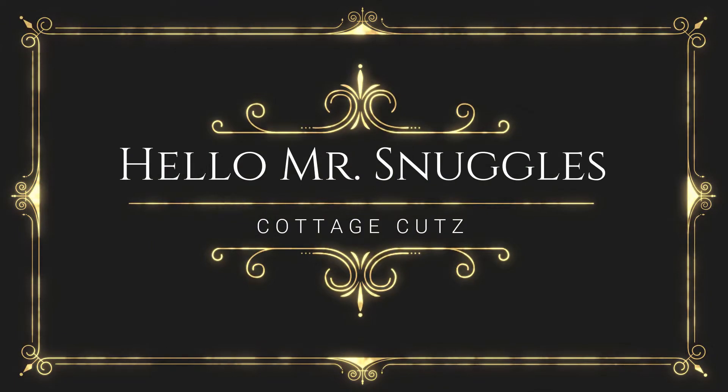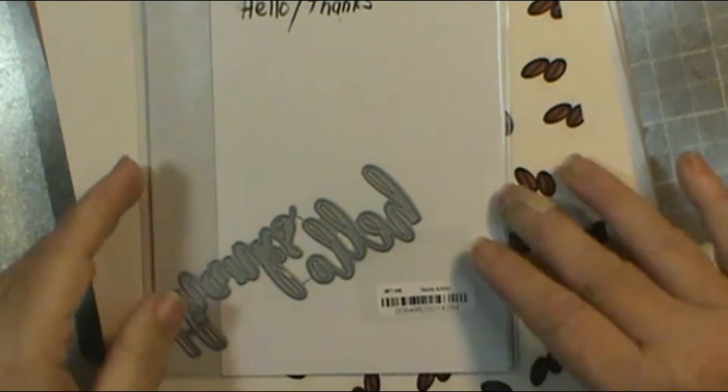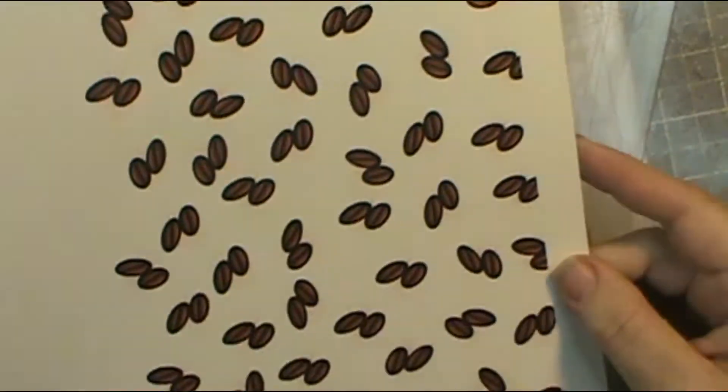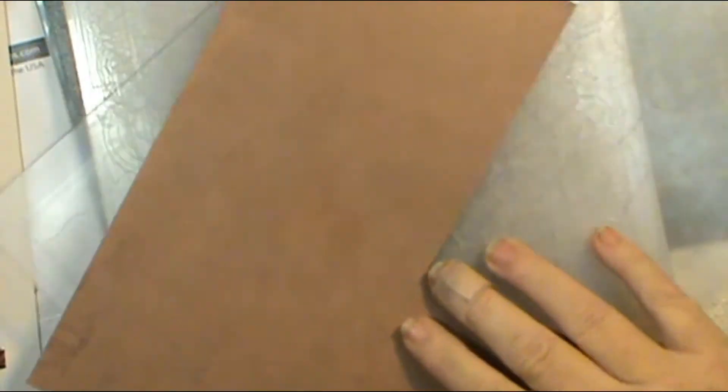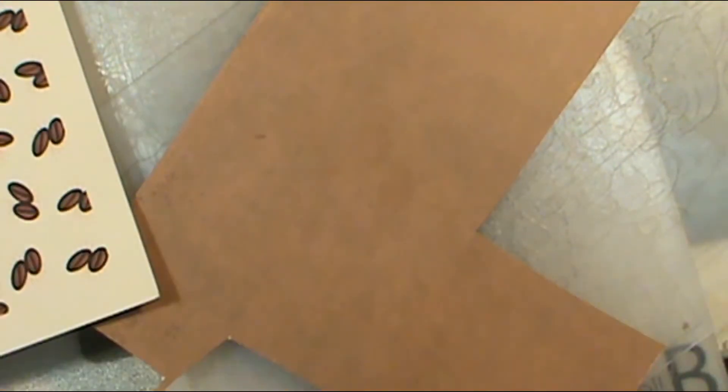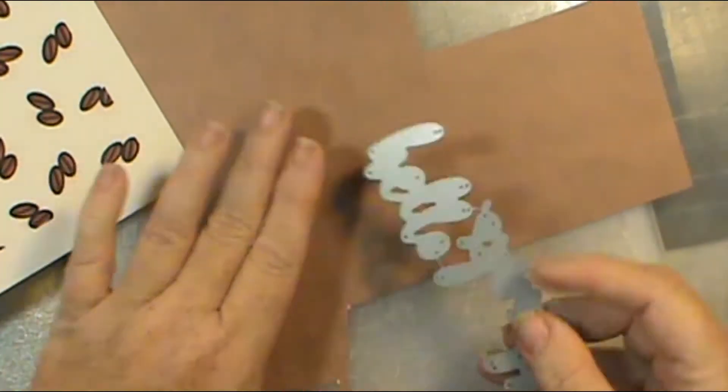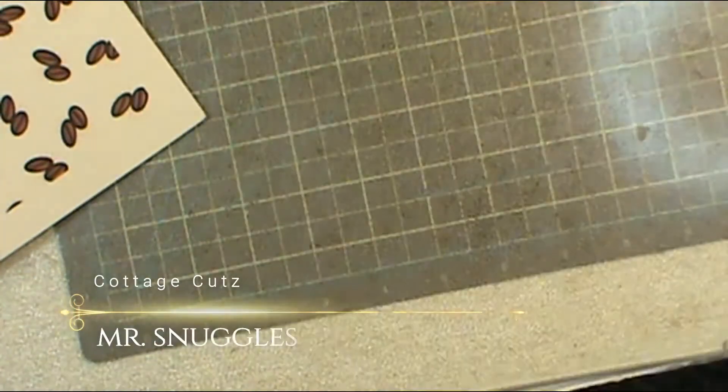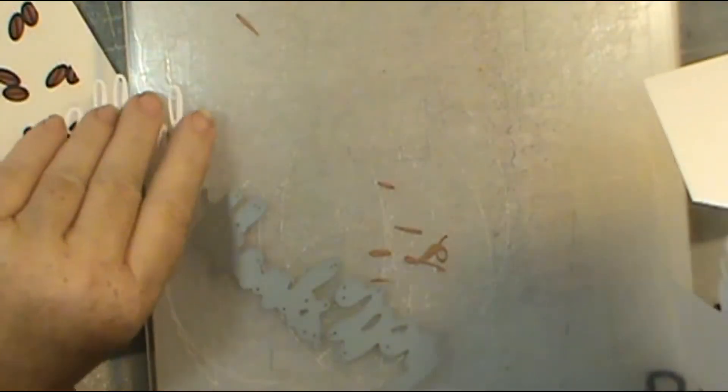Now I'm going to use the Mr. Snuggles Cottage Cuts die and the Dynamics Hello die. That is some paper that I made myself on my computer because I wanted some coffee bean paper and I didn't have any. So I printed some out that I found using one of the programs on my computer—quick, short, simple—and had myself my own designer paper.